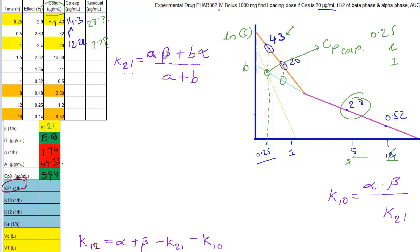This is the equation for K21: A times beta plus B times alpha divided by A plus B. So now what is A? The A intercept value is 44.33 plus the beta, it is 0.21 plus what is B intercept? 15.08, times the alpha value which is 1.74, 1.74 divided by A plus B.